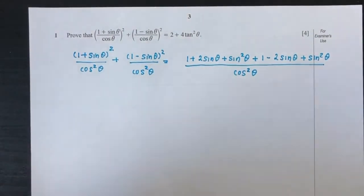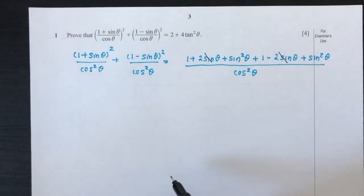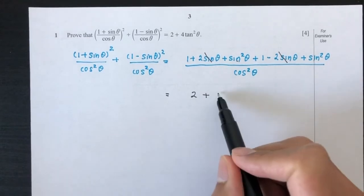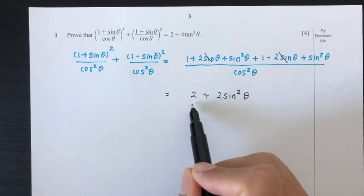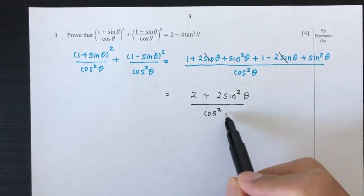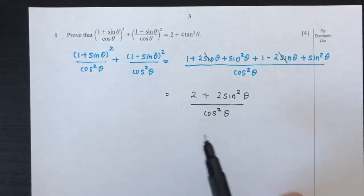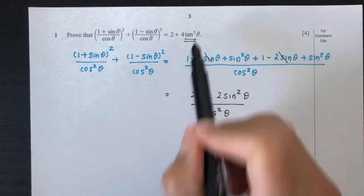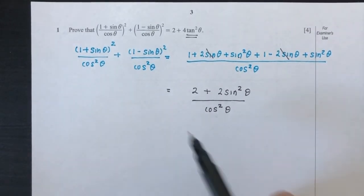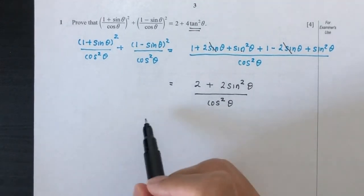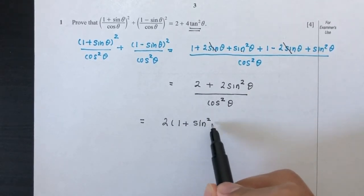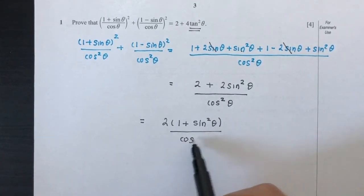Now we can try to simplify to see what we have. As you can see, these two will cancel out — the +2sinθ and −2sinθ cancel. 1 plus 1 is 2, so you have 2 plus 2sin²θ over cos²θ. Now we have cos here, which is a good sign because we are trying to find tan²θ. So we can factorize the 2 outside, giving 2(1 + sin²θ/cos²θ).